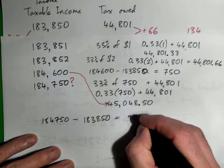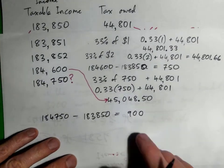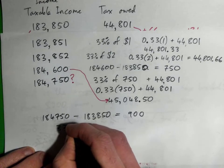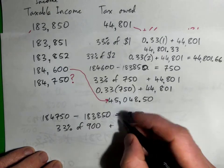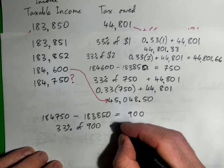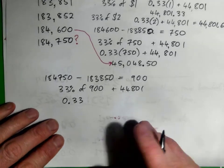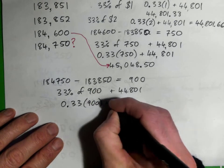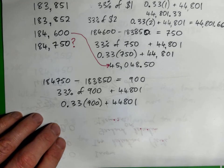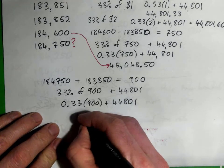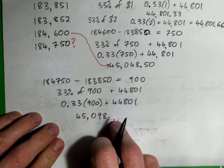Now, our marginal tax rate is 33%, so we've got to pay 33% of that $900, but we still owe the $44,801 on the original $183,850, so we've got to pay $44,801. So it's 0.33 times 900 plus 44,801, and if you put that in the calculator, you should find that to be $45,098, and that's your tax owed for that income.